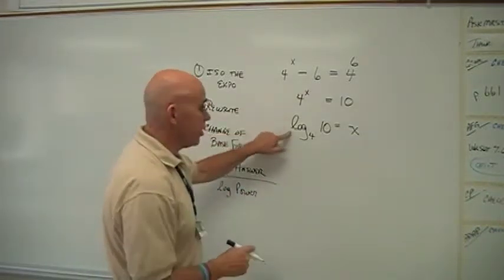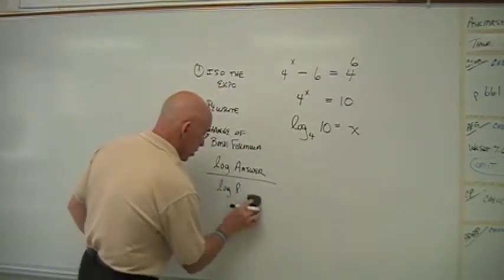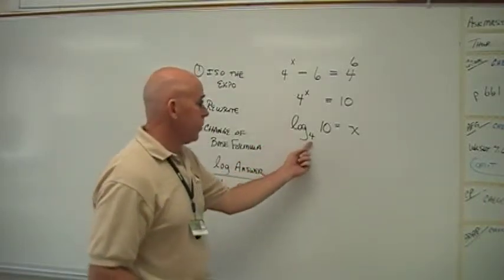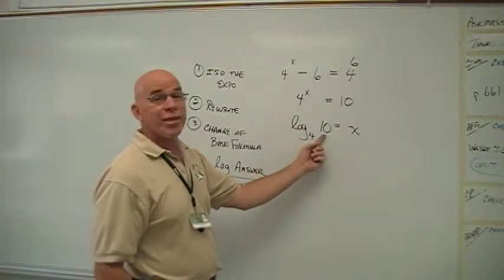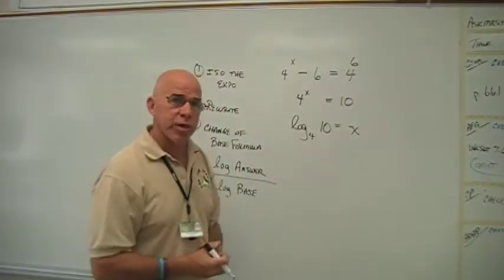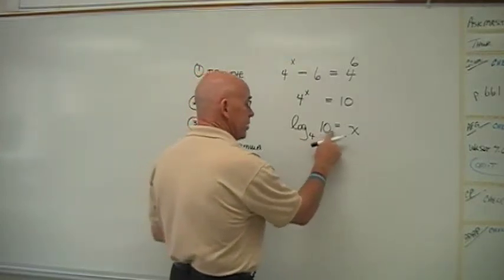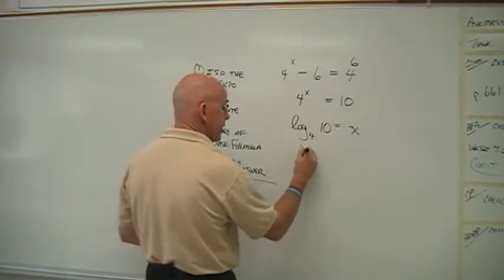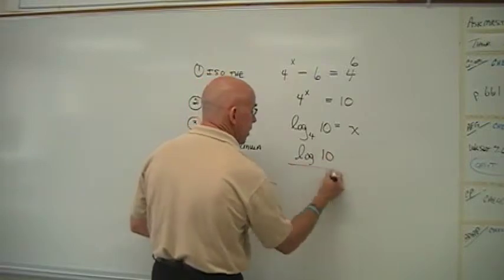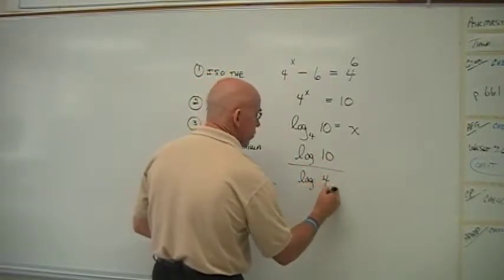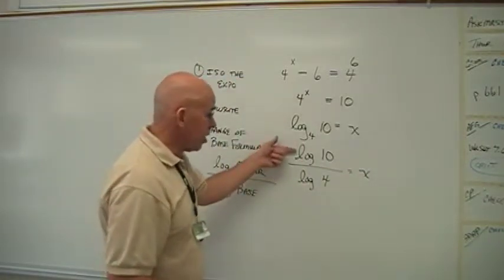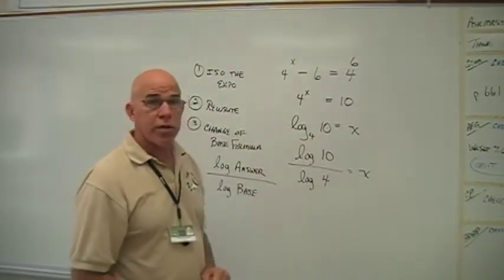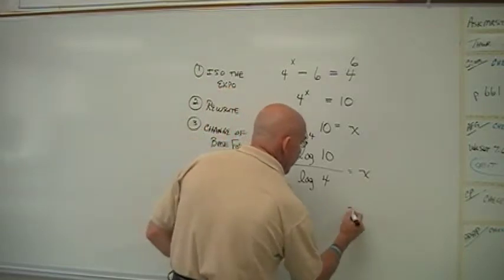What the change of base formula says is that you can use your log key on your calculator and take the log of the answer and divide that by the log of the base. So I can look at this log equation now and say what the base is. The base is four. And what is the answer? The answer is 10. So in using that change of base formula, I can take log base 10 of 10 and divide that by log base 10 of 4. Then I can go to my calculator and it'll give me what log base 4 of 10 is.